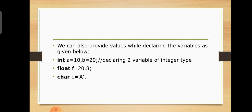We can also provide values while declaring the variables as given below. We can declare the variable with a name and value. For example: A is 10, B is 20. For float: float f equals 20.8.